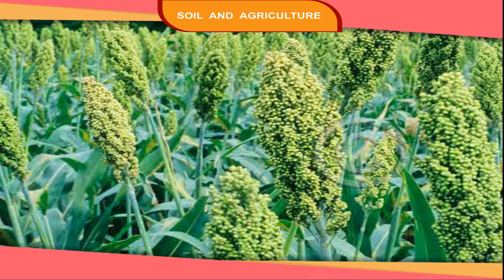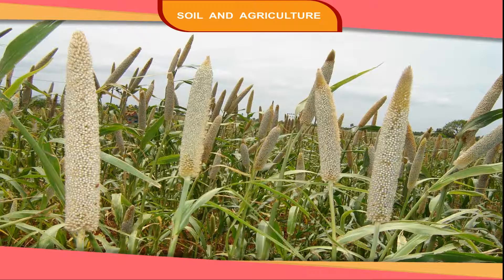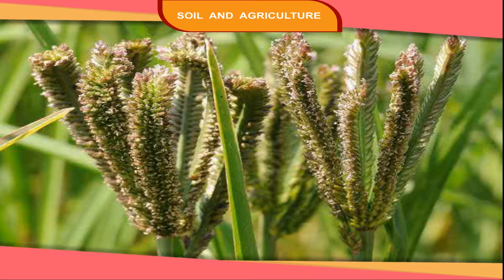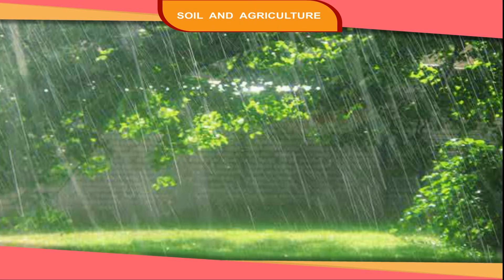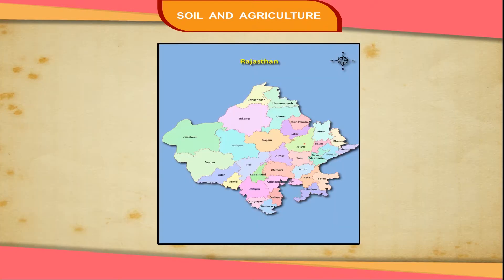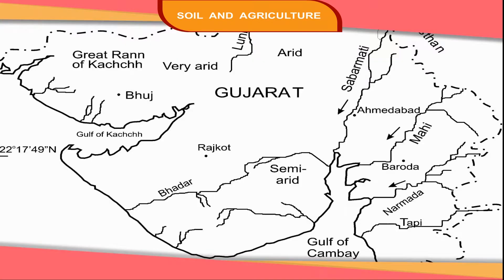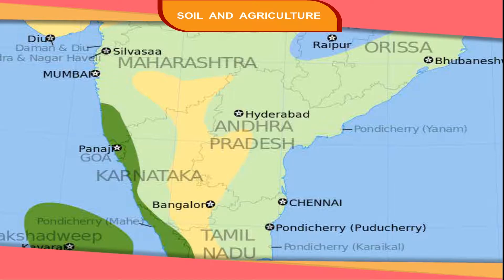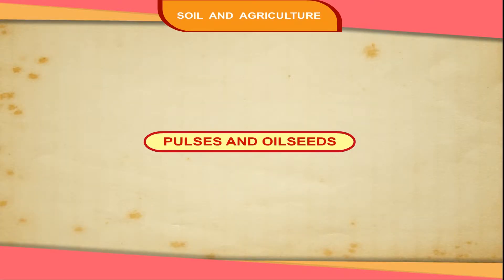Jowar, bajra and raghi are millets. They are grown in low rainfall and less fertile areas. Rajasthan, Gujarat and Karnataka are the main producers of millets.